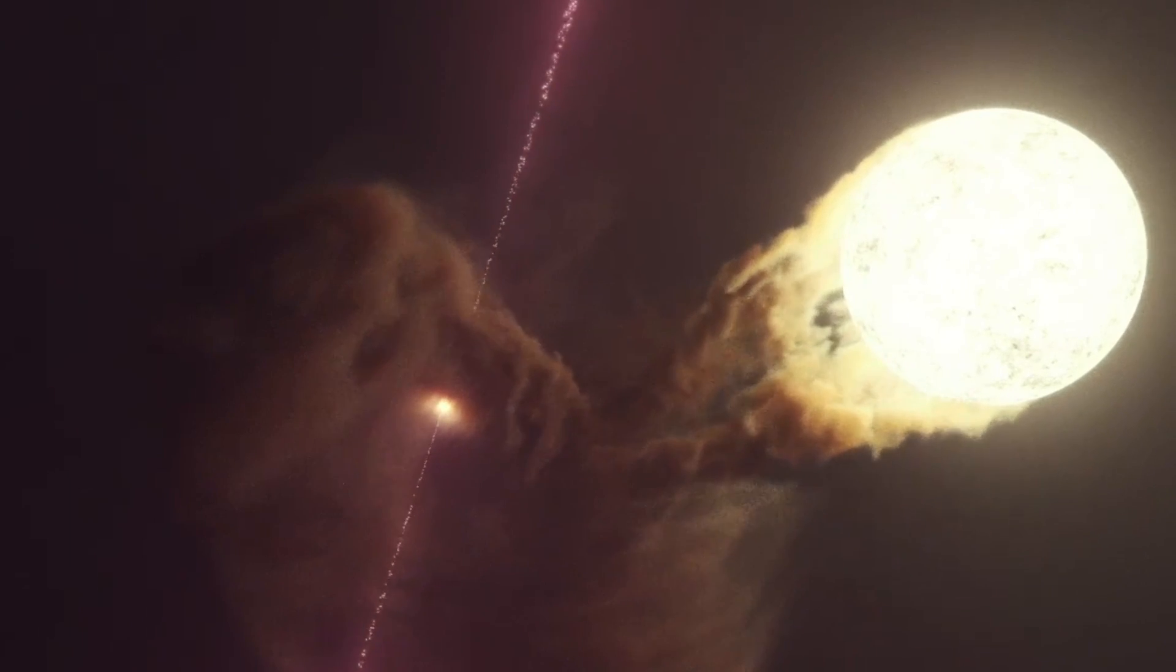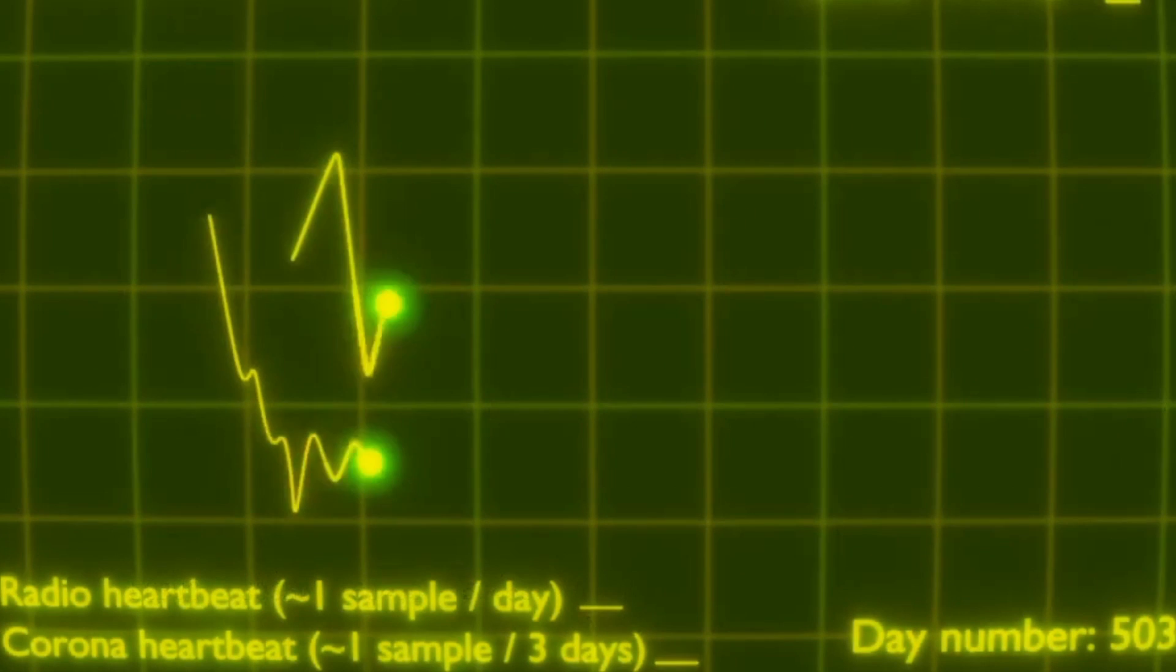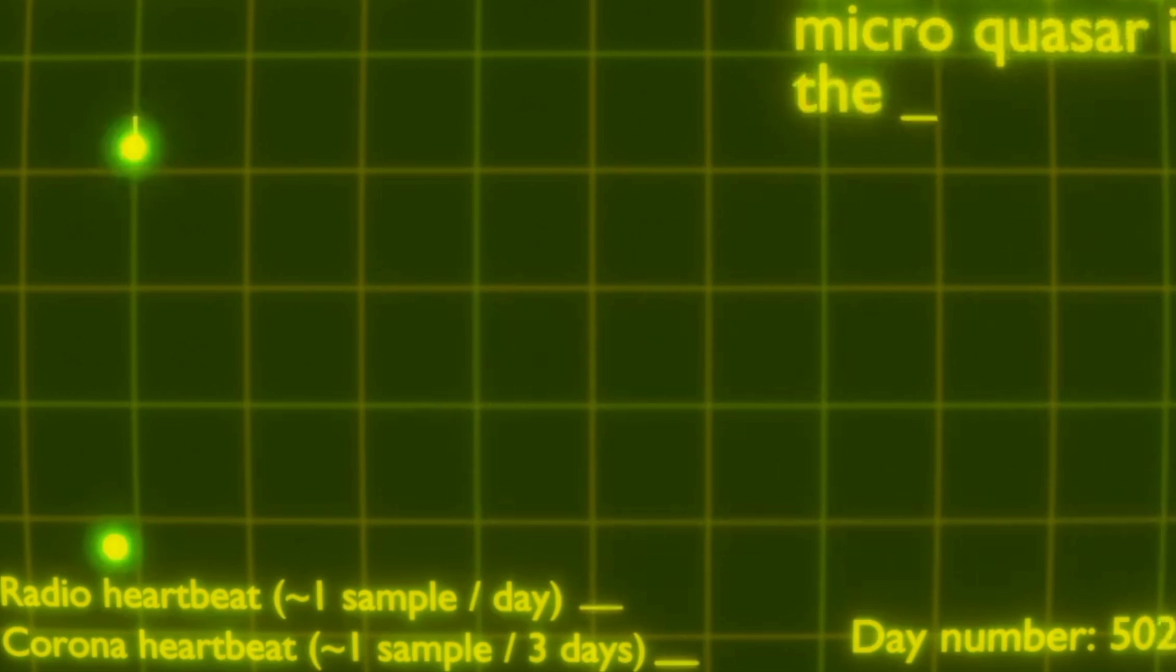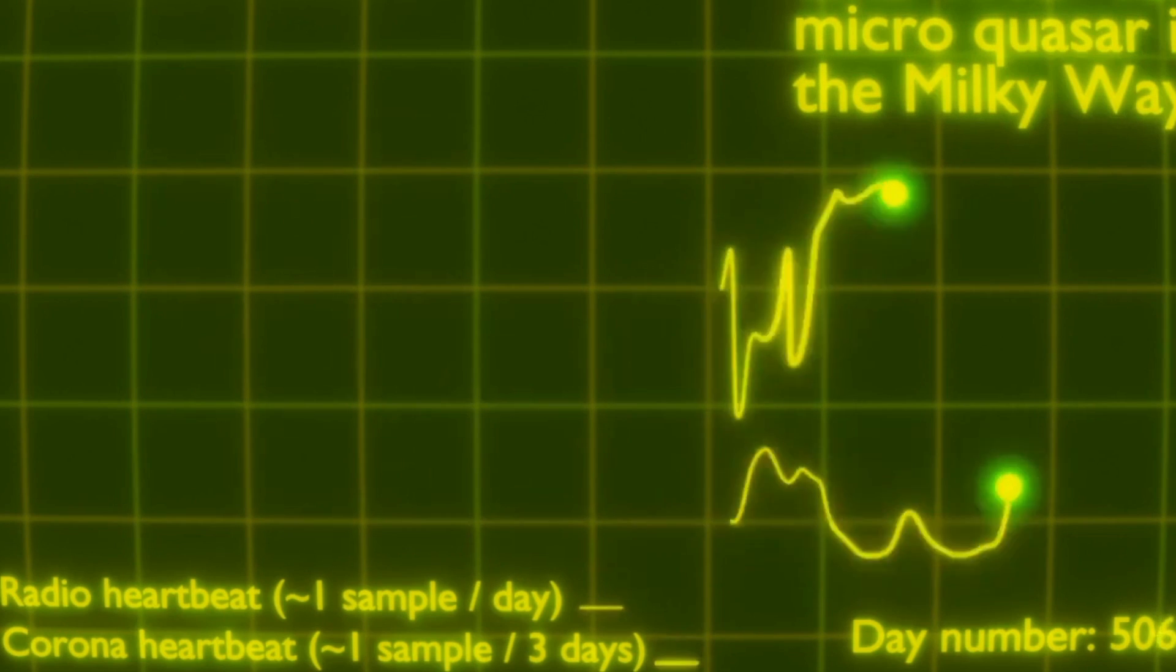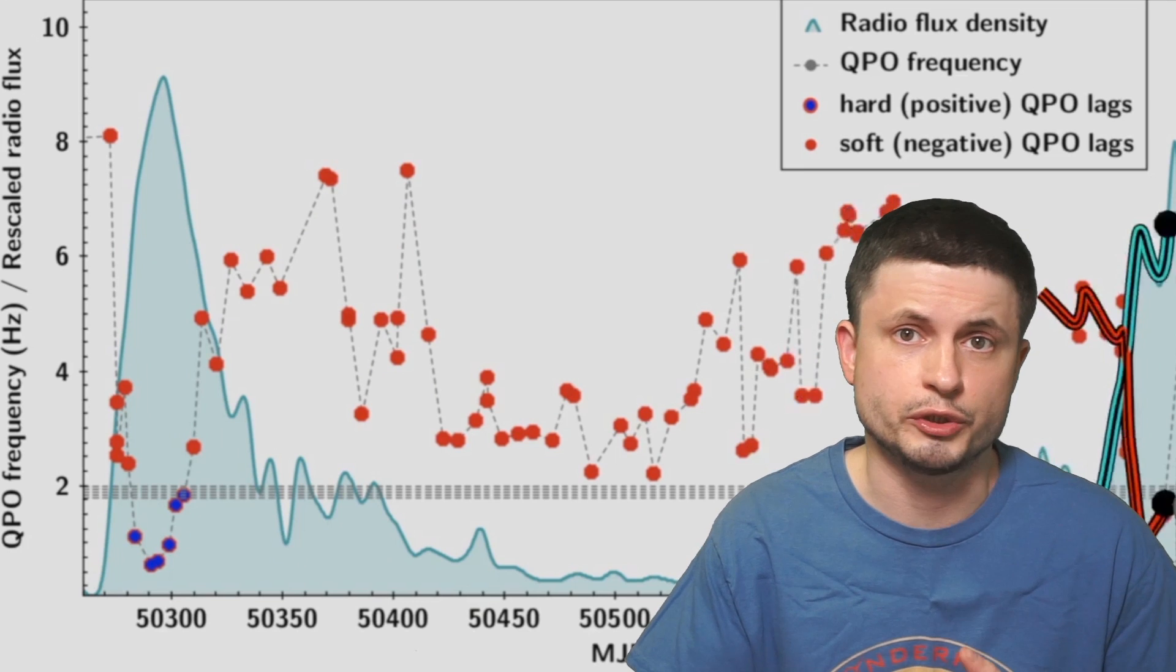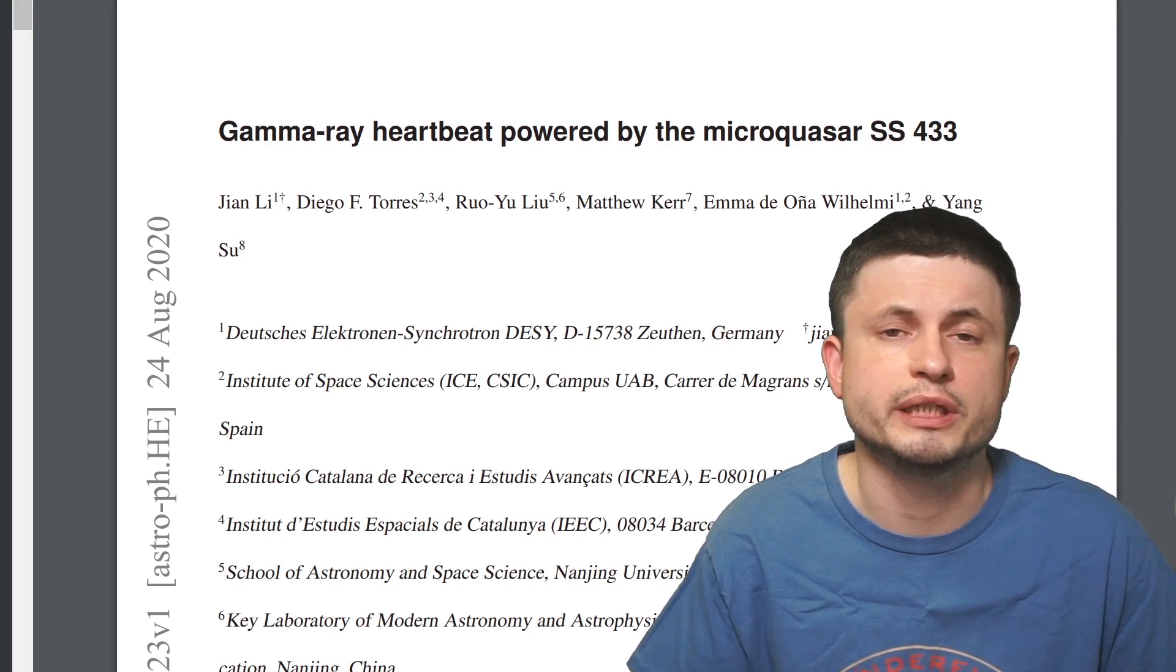With recent studies also discovering something else unusual about some of these microquasars, something that the scientists simulated right here. What you're looking at is actually a comparison between a person's heartbeat and various types of emissions coming from a microquasar known as GRS 1915 plus 105. And according to the scientists there is a very eerie similarity between the radio pulsations coming from this quasar and the heartbeat of a human being.